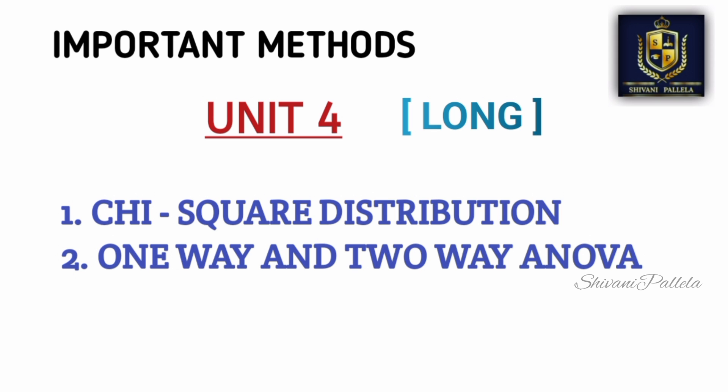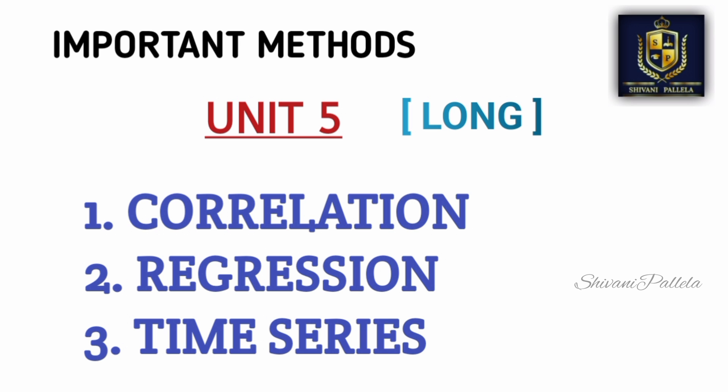For Unit 4, the important problematic methods are one-way ANOVA, two-way ANOVA, and chi-square test. Try to be perfect with both — one problematic will be asked for 8 marks. If you have luck, both internal and external questions may come from chi-square and one-way or two-way ANOVA. For Unit 5, learn correlation and regression. Time series is not necessary — if you are comfortable with correlation and regression, you can give time series as a choice.